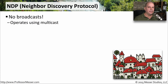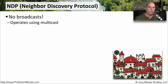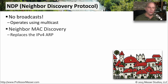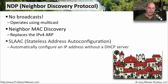IPv6 relies heavily on a protocol called NDP, or Neighbor Discovery Protocol. IPv6 doesn't use broadcast, so everything is done with multicast, communicating to the other devices that are on the local subnet. For example, in IPv4 we had ARP, or Address Resolution Protocol. In IPv6, the Neighbor Discovery Protocol handles that capability.